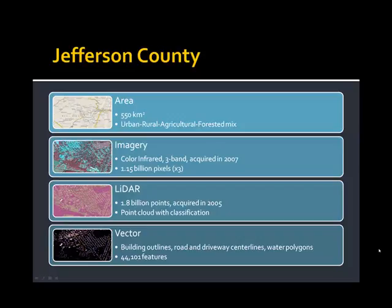We only made use of readily and freely available data for this project. We had access to 2007 color infrared imagery — three bands, 1.15 billion pixels — acquired through the USDA's National Agricultural Imagery Program. We also had LiDAR acquired two years earlier by the Natural Resource Conservation Service (NRCS) — 1.8 billion points with classification, allowing us to generate a digital elevation model and a normalized digital surface model depicting feature heights relative to the ground. Finally, we leveraged Jefferson County's existing GIS data sets: building outlines, road and driveway centerlines, and water polygons — totaling over 44,000 individual vector features.